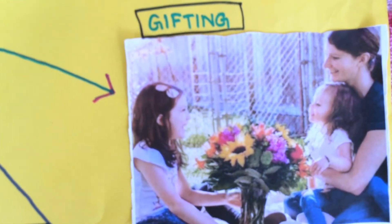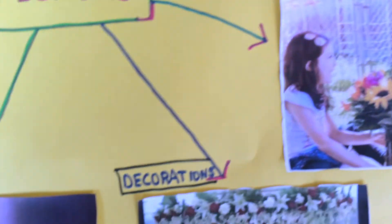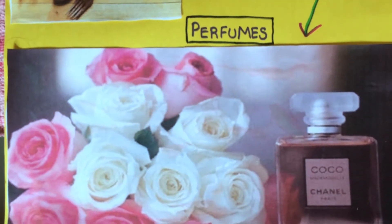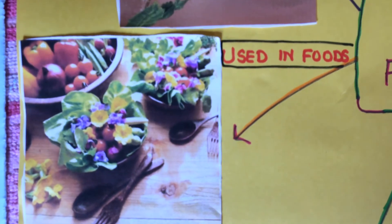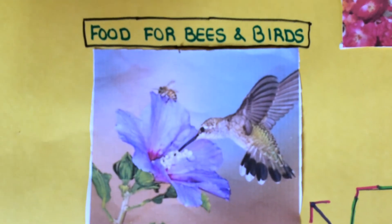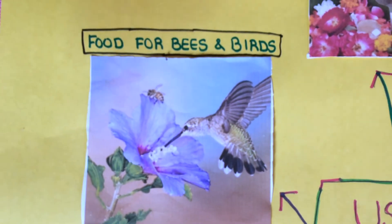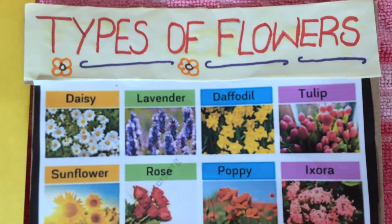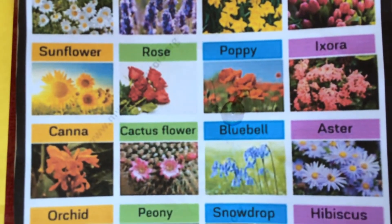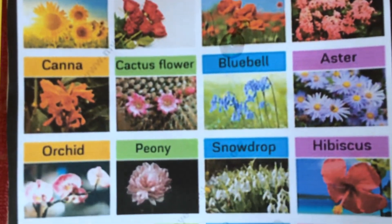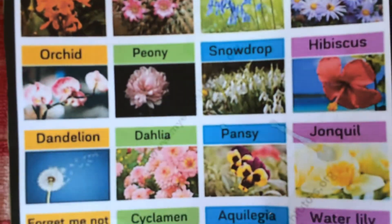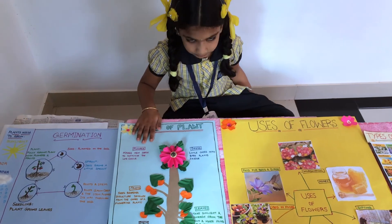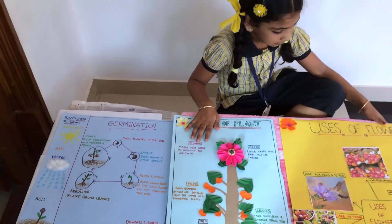The roots hold the plant in the soil and absorb water and nutrients from the soil. Uses of flowers: worshipping, honey, gifting, decoration, perfumes, used in foods, food for bees and birds. There are different types of flowers.